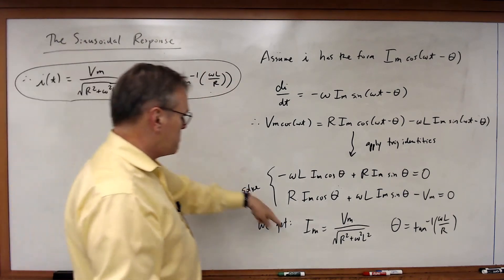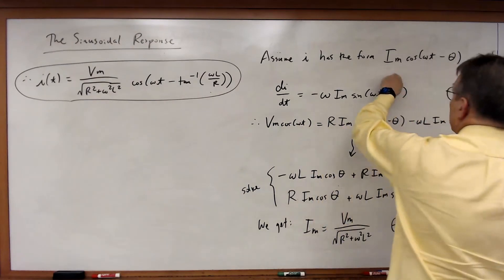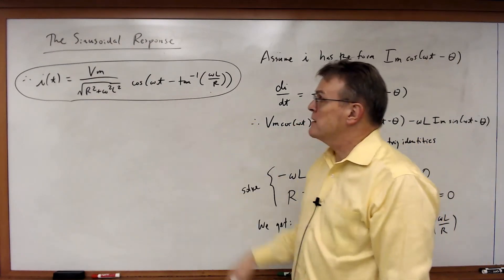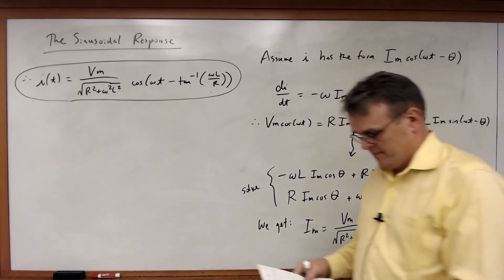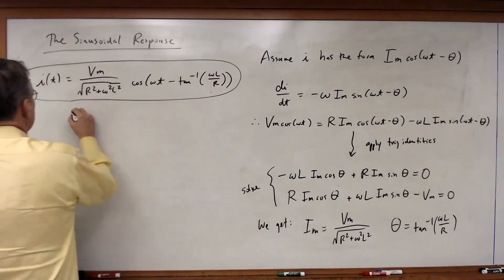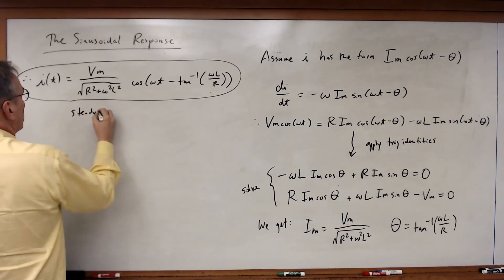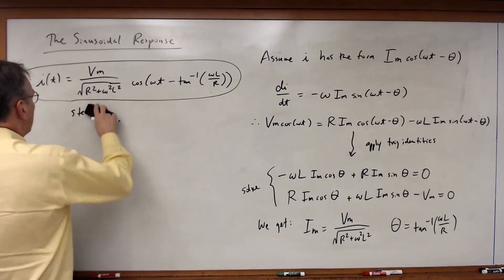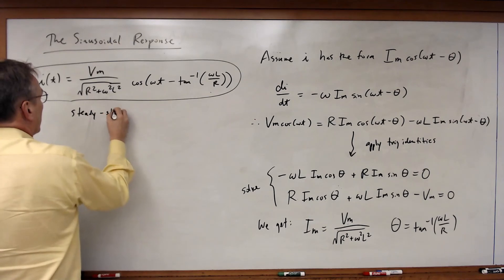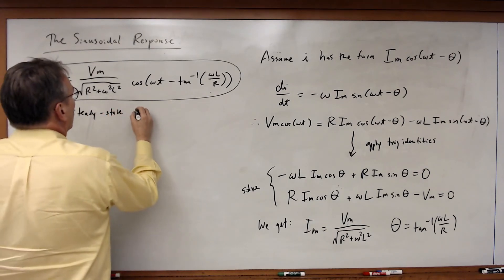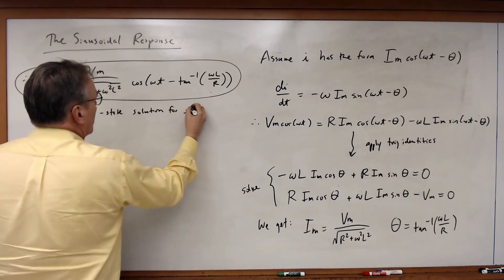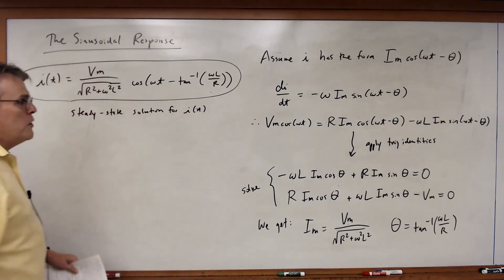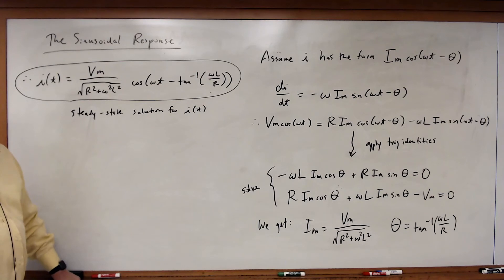And this will be our solution. So we'll plug these parameters into that and we get this for I sub T. And that is the solution to the differential equation. This is the steady state solution.